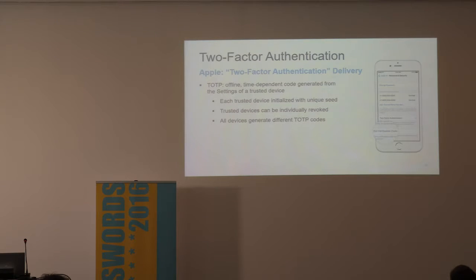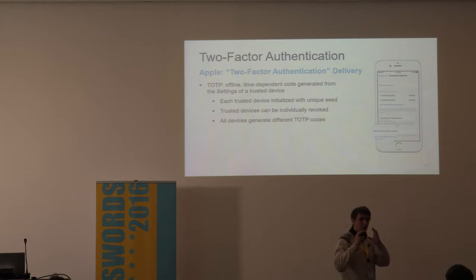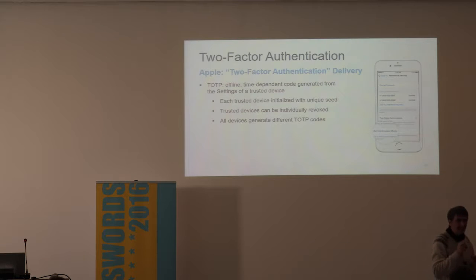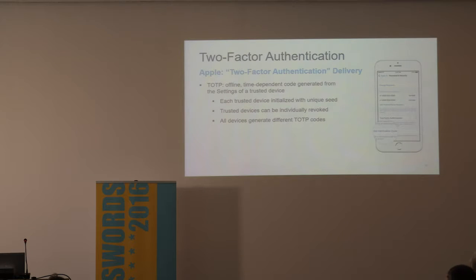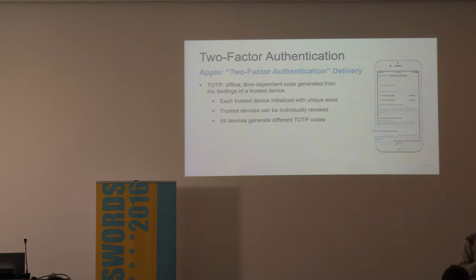TOTP is pretty much standard for all other two-factor authentication methods. However, Apple does not reveal the seed — it doesn't give you a QR code to scan. Instead, the seed is pushed to a trusted device directly from Apple's cloud servers. If you have multiple Apple devices — several iPhones, iPads, a Mac OS device — each device will be initialized with a unique seed, and each one is individually revocable.